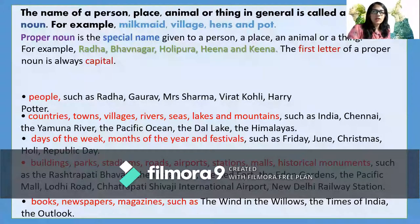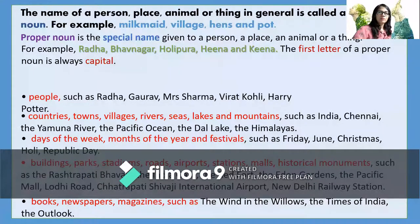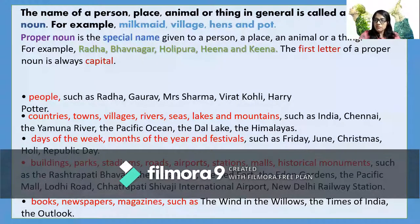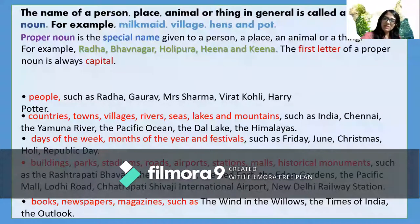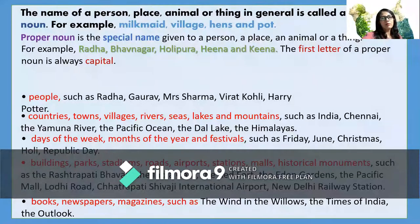These are examples of common nouns. A milkmaid is a girl or woman who works in a dairy, so she could be anyone — in general, 'milkmaid' could refer to anyone. 'Village' — every village has a different name, so if I say 'village' it could be any village. Similarly, the same goes for hens and pot.